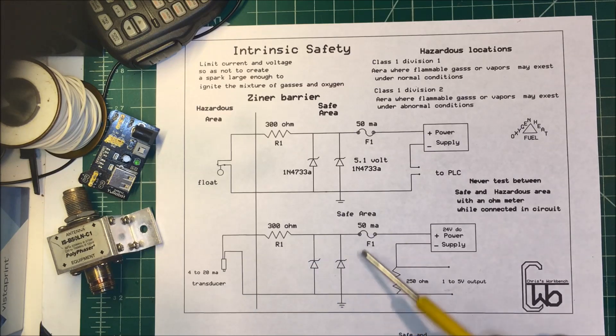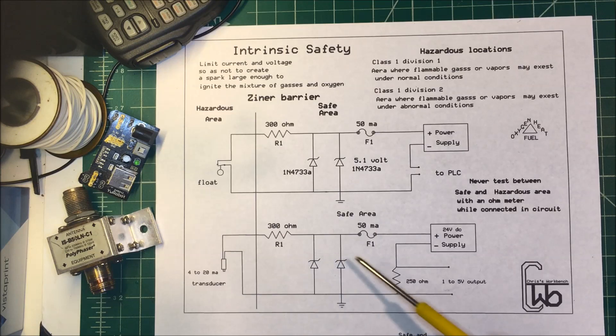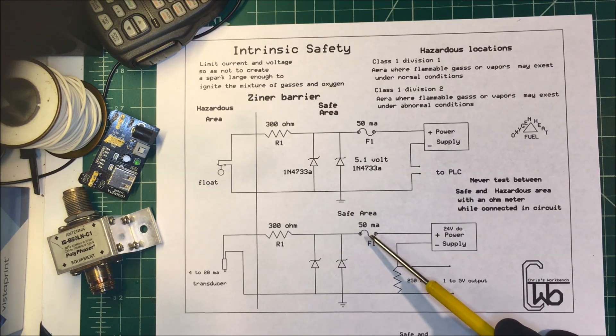And in this scenario down here we have a 4 to 20 milliamp transducer. Same thing - in this case we have a 24 volt DC power supply, a 50 milliamp fuse, a couple Zeners, probably 20 to 25 volt Zeners.